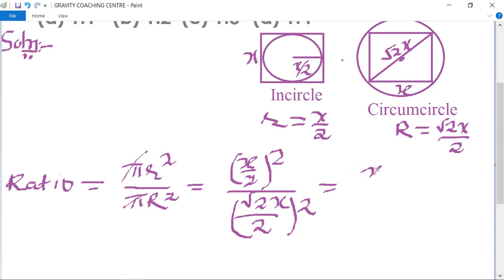This becomes x squared upon 4 divided by 2x squared upon 4. x squared x squared cancel, 4 and 4 cancel.